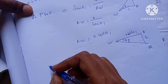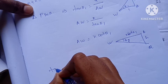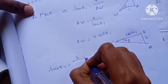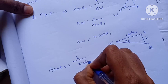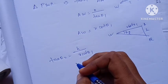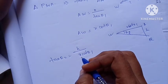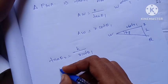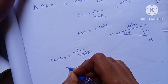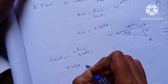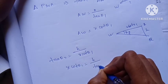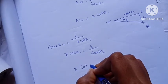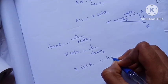Now we see here: tan theta is equal to opposite by adjacent. Similarly, tan theta is equal to opposite by adjacent. So 1 by tan theta1, and 1 by tan, so x equals y.